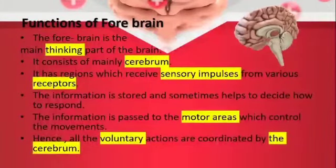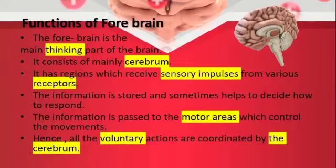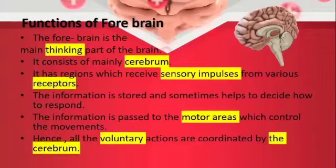How does it respond? It passes the information to the motor areas. For example, when I tell you to stand up, you are listening. The hearing sense takes the impulses to the cerebrum, the cerebrum stores it, and then it sends the command to stand up. It gives the impulses to the motor areas — your legs — and immediately you stand up. This is how the signaling process takes place.